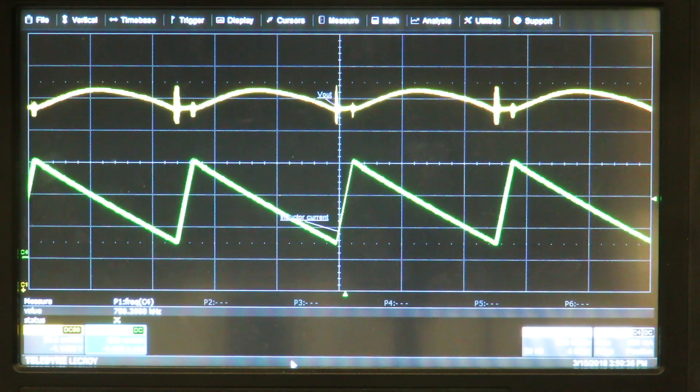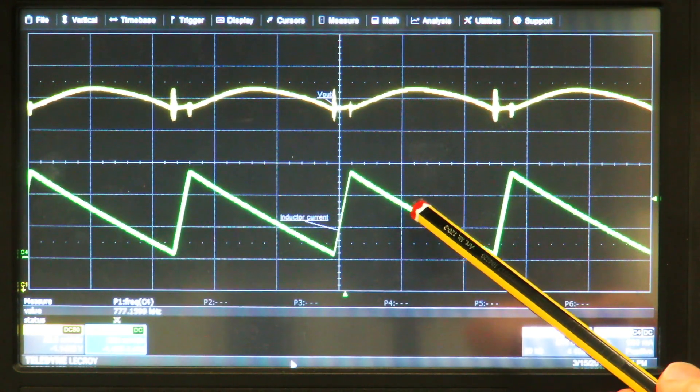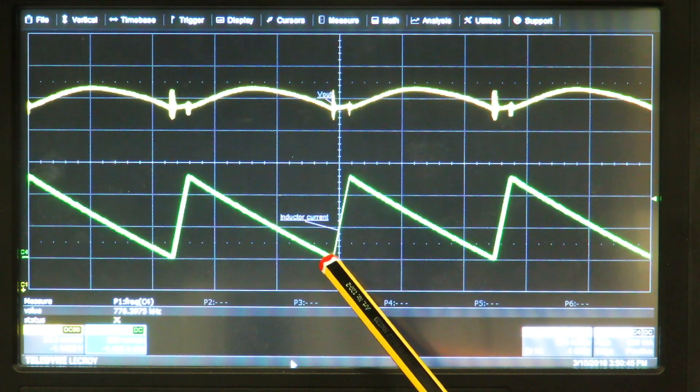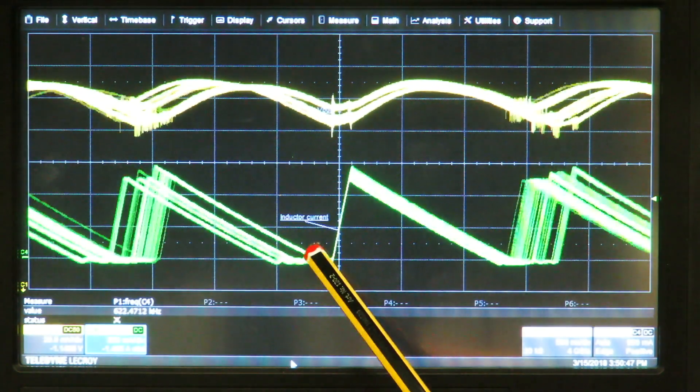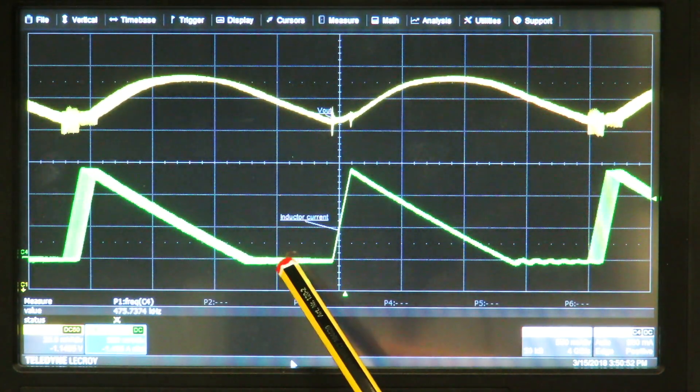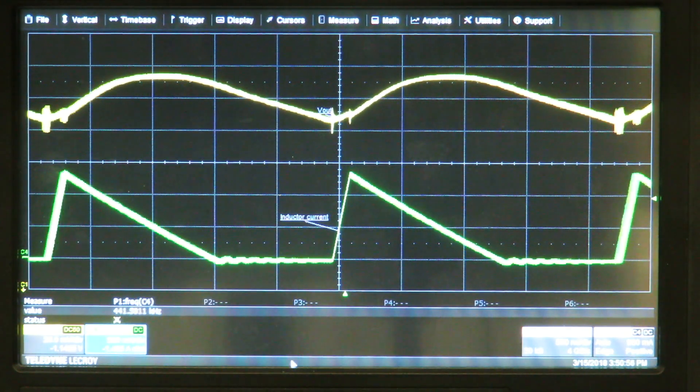Now I'm going to reduce the load current. And we can see that the inductor ripple current goes down and down until we approach zero. And this is the border where we start now pulse frequency modulation. And you can see we reduce the switching frequency.